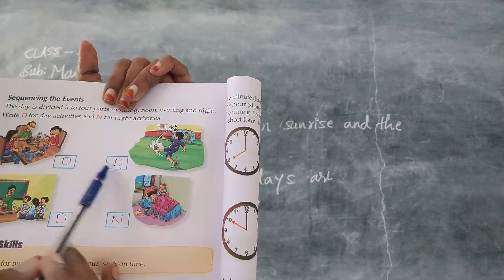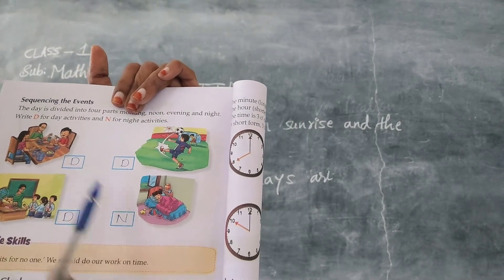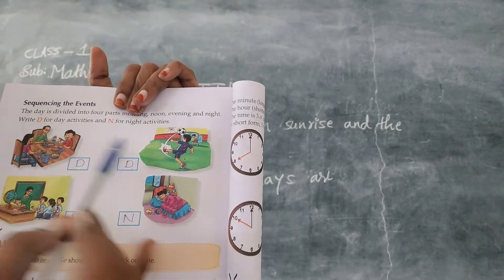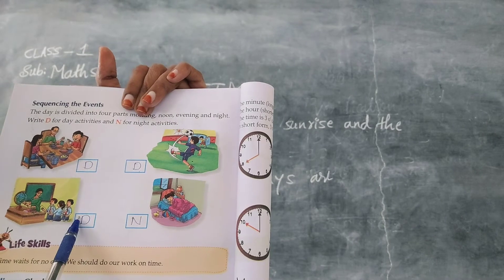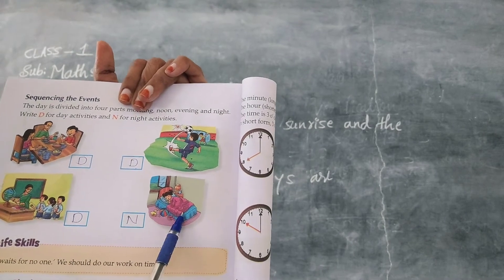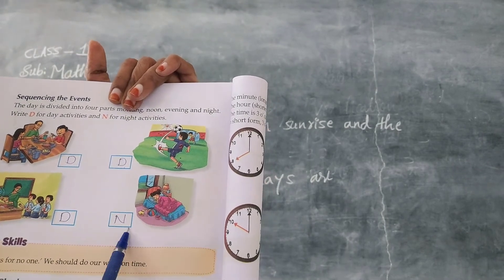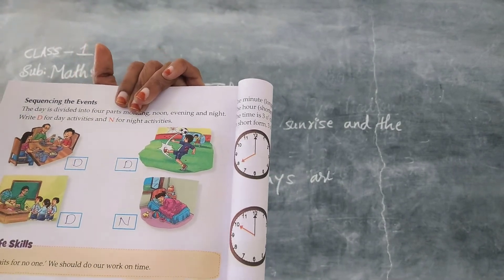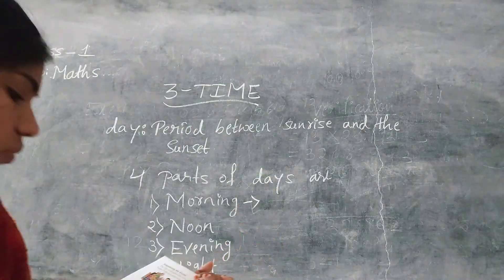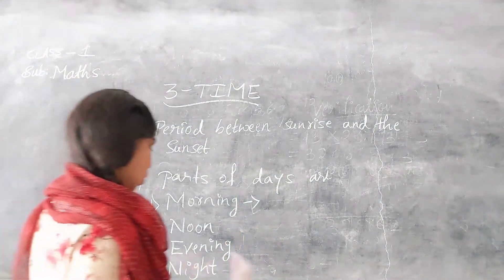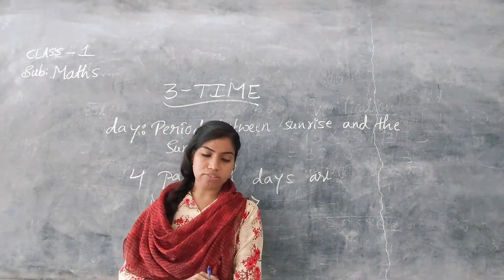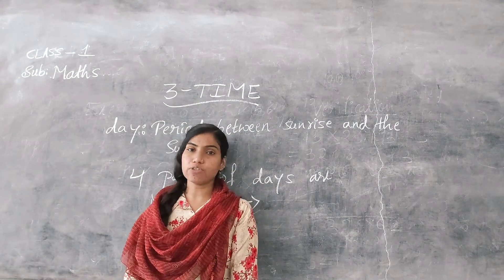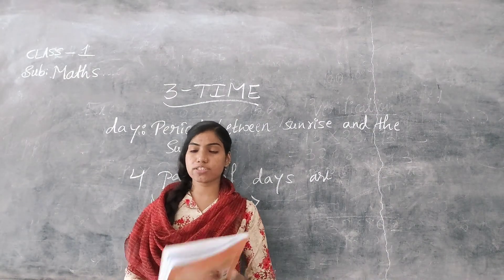D means day, N means night. These three activities we are doing in day time, and this one we are doing at night time, so write N here. For today's class it is enough and I will continue in the next class.